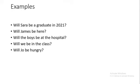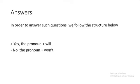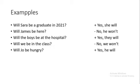For example: Will Sarah be a graduate in 2021? Yes, she will. Will James be here? No, he won't. Will the boys be at the hospital? Yes, they will. Will we be in the class? No, we won't. Will Joe be hungry? Yes, he will.